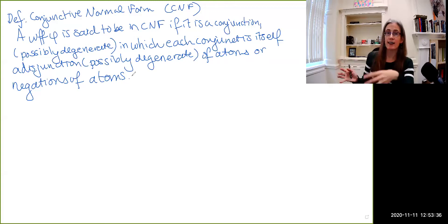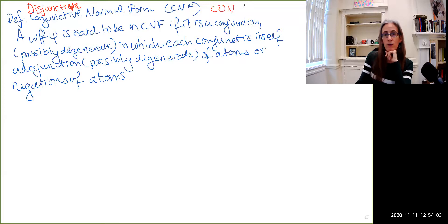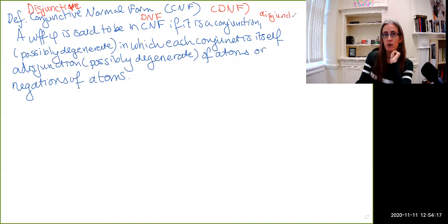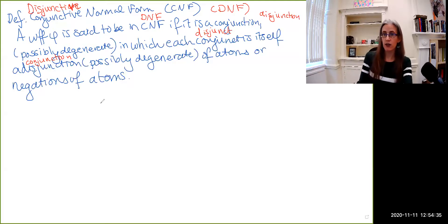Disjunctive normal form is going to be exactly the same thing, except it will be a disjunction — possibly degenerate — of conjunctions of atoms or negations of atoms. We can modify this definition to get the disjunctive normal form, which is of course going to be DNF. A formula phi is said to be in disjunctive normal form if it is a disjunction, possibly degenerate, in which each disjunct is itself a conjunction, possibly degenerate, of atoms or negations of atoms.